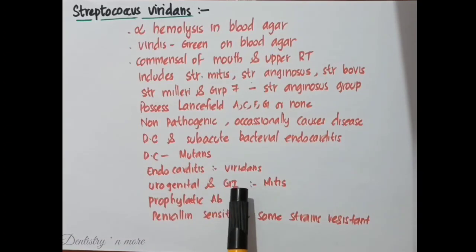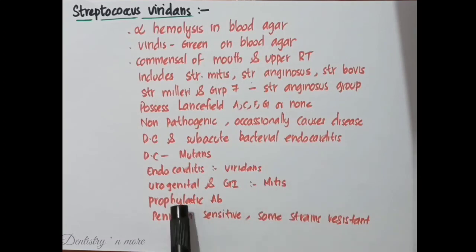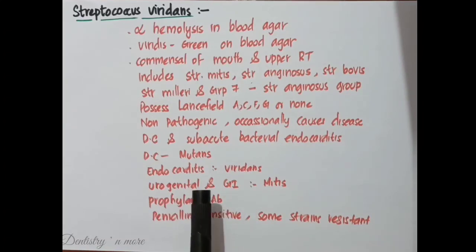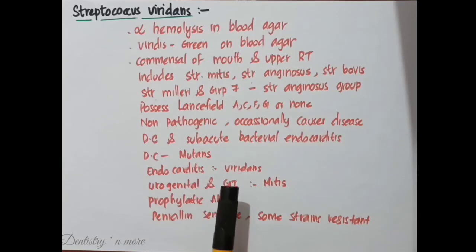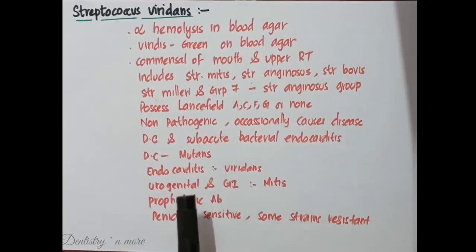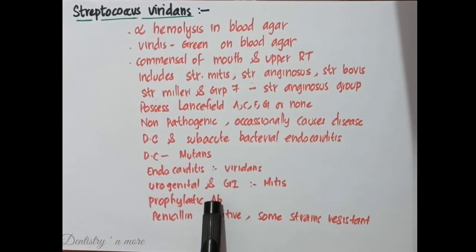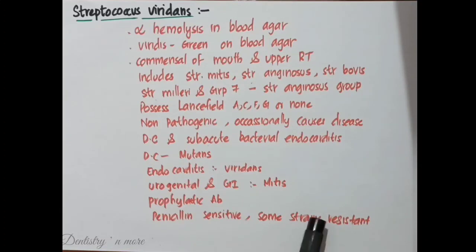Urogenital and gastrointestinal diseases are caused by members of Streptococcus mitis. Endocarditis occurs in persons with predisposing factors such as valvular heart disease, congenital heart disease, and cardiac surgery. Following some dental procedures like tooth extraction, they may cause transient bacteremia and get implanted on damaged or prosthetic valves or in the congenitally diseased heart, growing to form vegetations. Prophylactic antibiotics should be given in such persons before tooth extraction or other procedures. Viridans Streptococci are generally penicillin-sensitive, but some strains may be resistant, so antibiotic sensitivity must be determined for appropriate treatment of endocarditis.